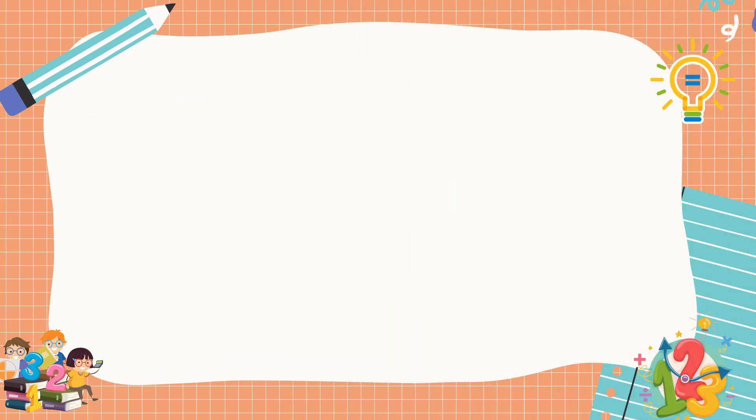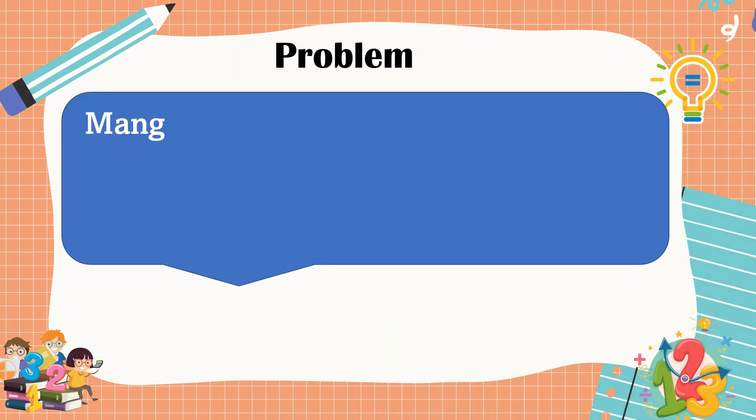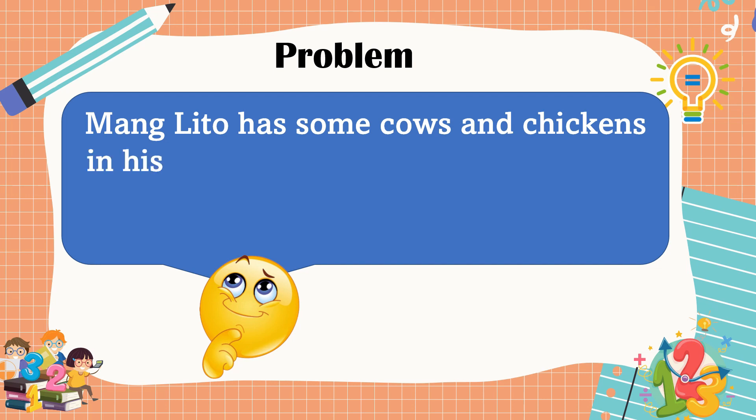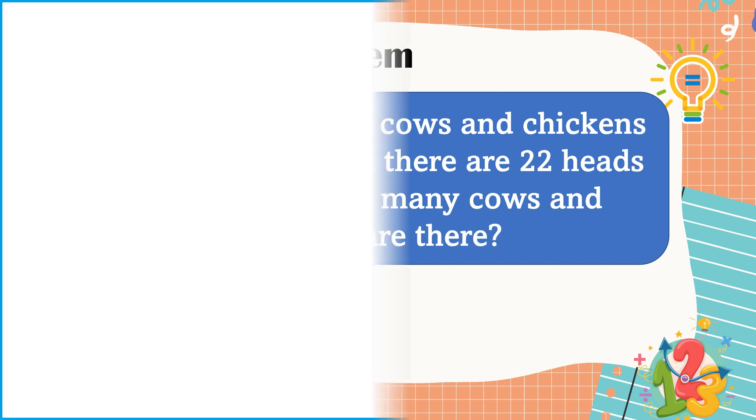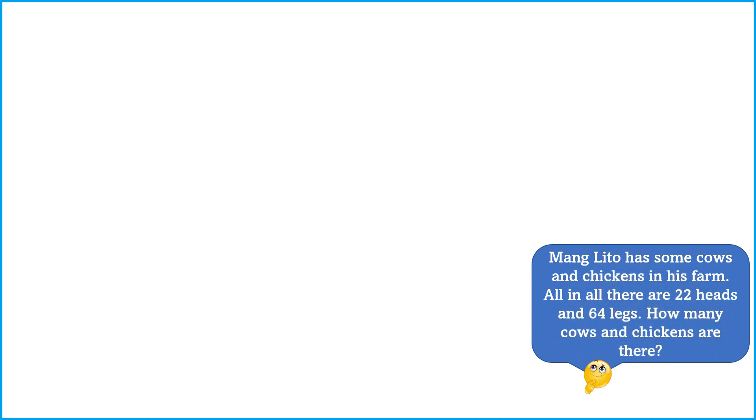This is our second problem. Mang Lito has some cows and chickens in his farm. All in all, there are 22 heads and 64 legs. How many cows and chickens are there? Our second problem is a multi-step non-routine problem, so we can use a drawing or illustration to visualize how we're going to solve this problem.